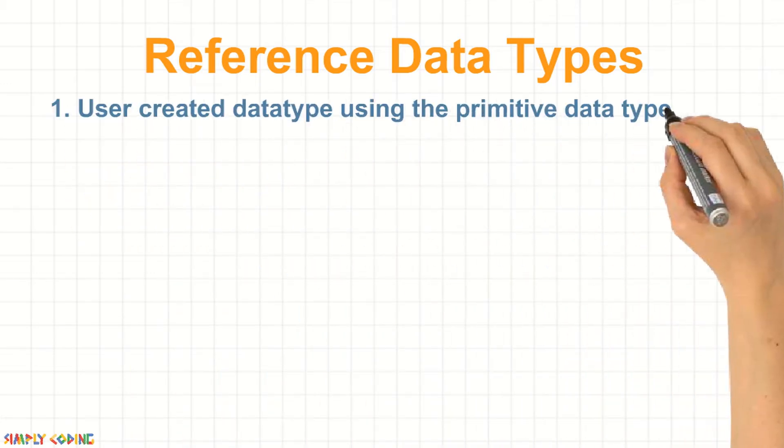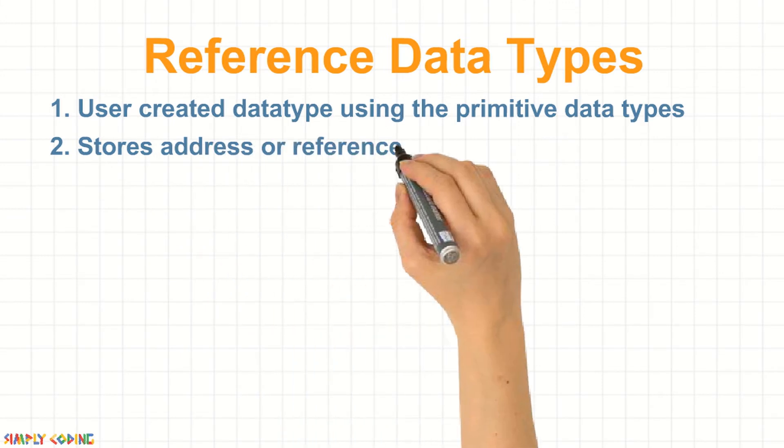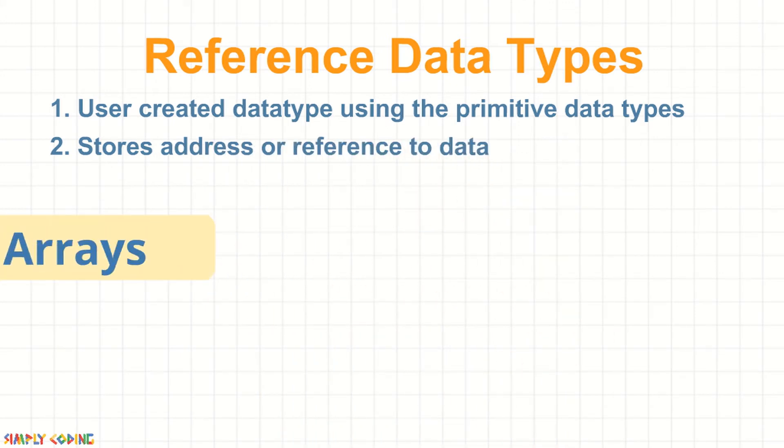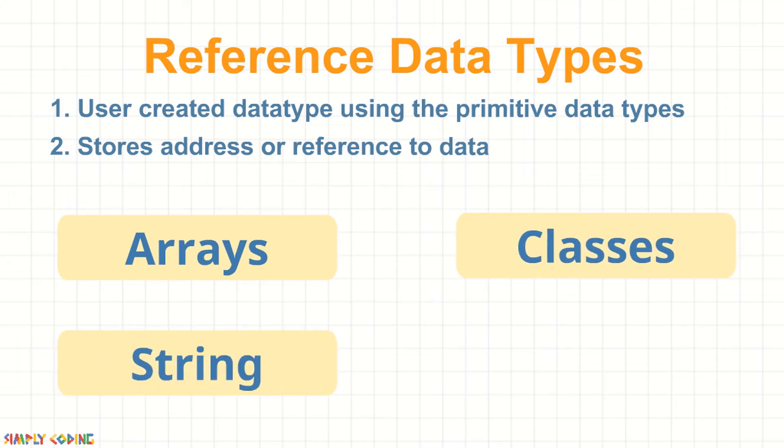Reference data types are user-created data types using the primitive data types. Reference data types store address or reference to data. Examples are arrays, classes, etc., which we will learn a bit later.